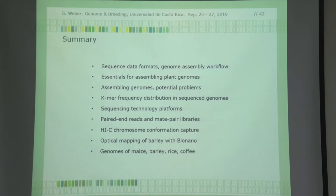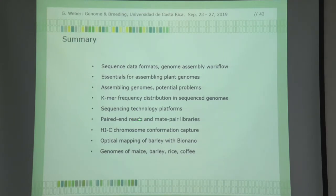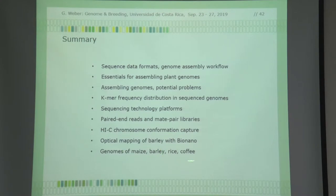Let's summarize this part: we looked at sequence data formats and briefly at the workflow for assembly. We talked about essential things like which platform you use, and problems — big genomes, heterozygous, with translocations — as opposed to haploid or small genomes which are easier. Then we looked at K-mers, which are an essential tool in assembling sequences and also serve as a quality control tool. Then sequencing platforms, paired-end and mate-pairs for larger and more distant information, Hi-C chromosome conformation capture, and finally optical mapping to get information in a really big picture.